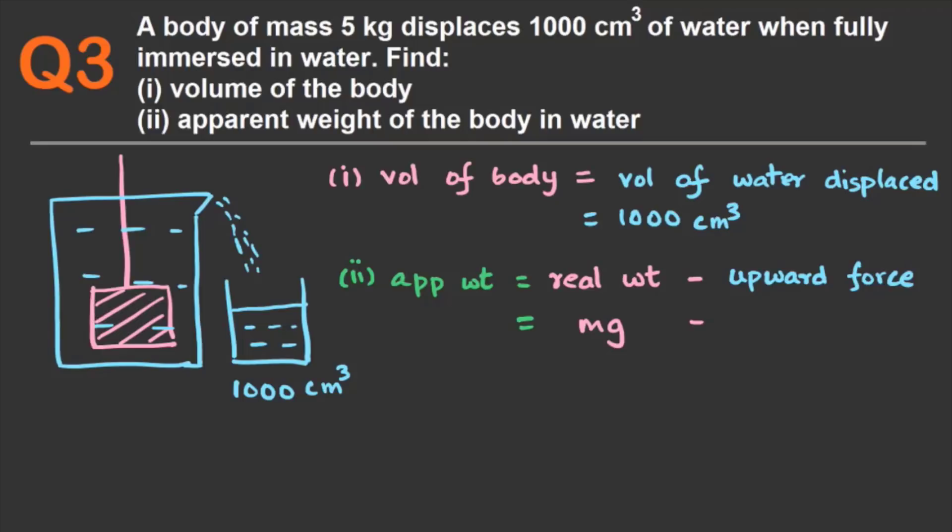And the upward force is the weight of the liquid displaced. So let's use the formula that we've learned: VL, DL, G. So let's plug in the values into the formula. The mass m is 5 kg and g the acceleration due to gravity is 10 meters per second square. VL, the volume of the liquid displaced is thousand centimeter cube.